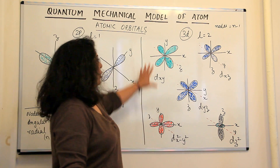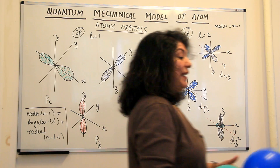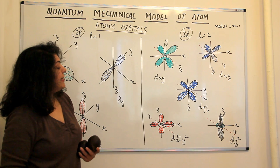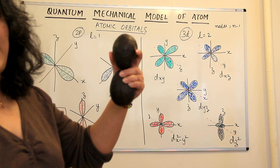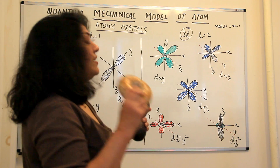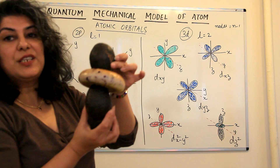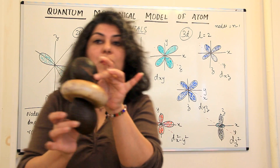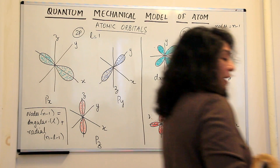The last orbital — although all four of the others look identical, their orientation is different — this fifth one has a different shape altogether. This is the dz² orbital. In this orbital, the two lobes are oriented along the z-axis, and in the middle there is a donut-shaped region of probability. So the probability is like a donut in between, and the two lobes lie above and below it. This is the shape of the dz² orbital.